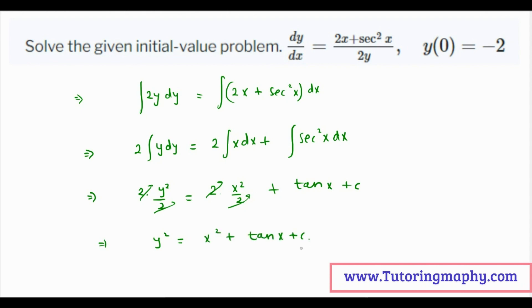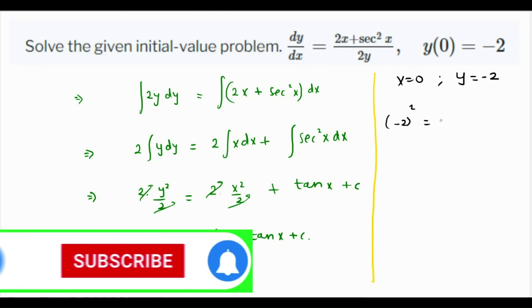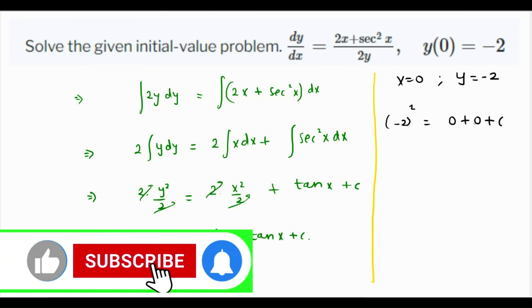Now the initial condition is when x is 0, y is minus 2. Let's use that to get the value of c. When x is 0, y is minus 2, so minus 2 whole square is equal to 0 plus 0 plus c because tan 0 is also 0. This means that c is 4.